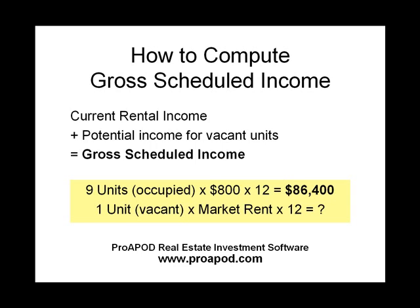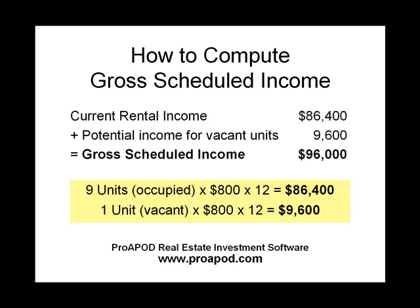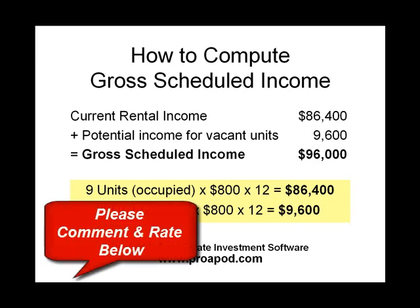The idea is to use a reasonable market rent for the vacant units. In this case, we assume the vacant unit will also rent for eight hundred dollars a month, or ninety-six hundred dollars a year. Now plug in the numbers: eighty-six thousand four hundred plus ninety-six hundred equals a gross scheduled income of ninety-six thousand dollars a year.